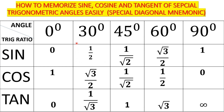Most of the time, students get into the examination hall and are not able to retain these values. That's the reason why I've brought out this mnemonic — to help you recall these values without necessarily memorizing each and every one of them. You just have to note one or two, and from those you can deduce all the other values. This method is a mnemonic and is not a formal mathematical method.